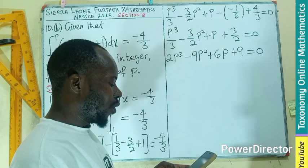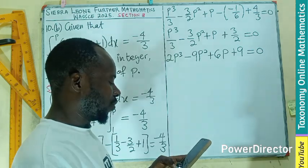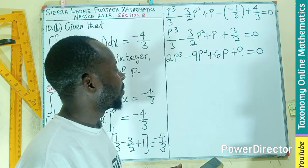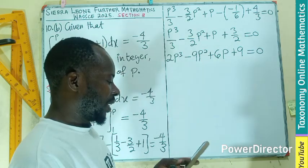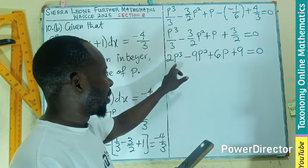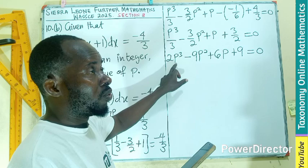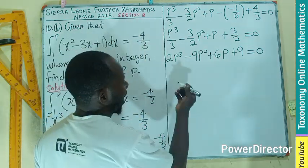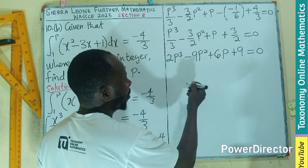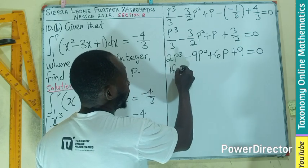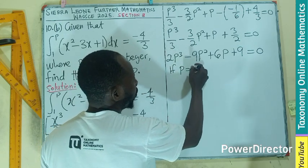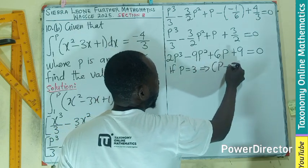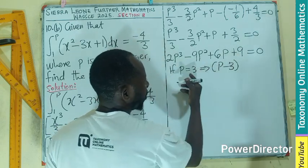If we use 2, 2 here will be 16 plus 9 equals 0, that will not work. So let's use 3. 3 will give 27 minus 81 plus 18 plus 9 equals 0. So we have the factor. If p equals 3, it implies that the factor is going to be (p minus 3) equals 0.